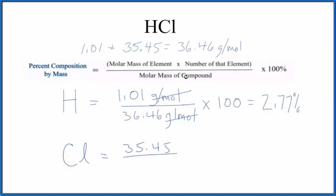Since we only have one chlorine atom, if I multiply this by one it stays the same, then divide by the molar mass for the compound and multiply by 100 to get a percent. I end up with 97.23%.